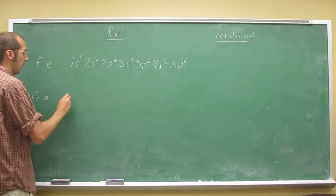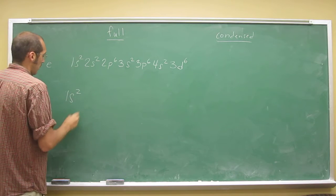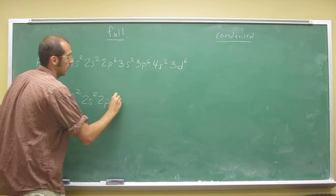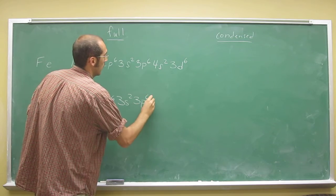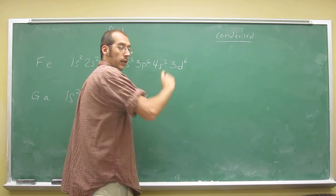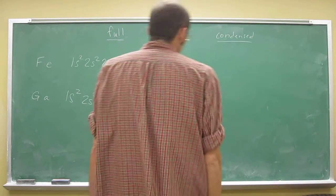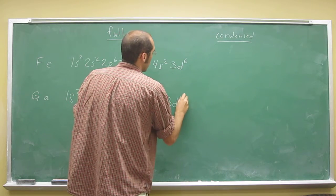So all the way up to iron is the same: 1s2, 2s2, 2p6, 3s2, 3p6, 4s2. And then you go all the way up to 10, right? So 3d10.